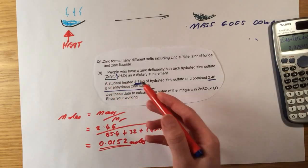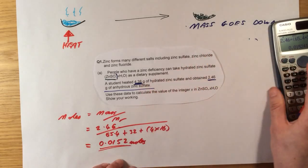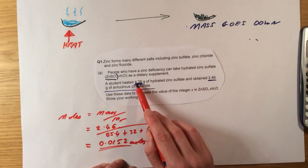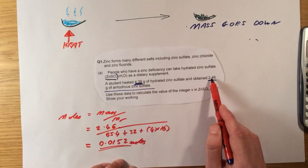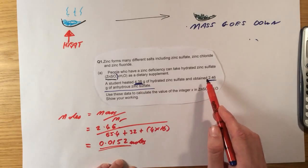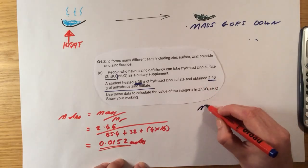I get an answer of 0.0152 moles of ZnSO4 left. And it looks like I'm a bit stuck here but I'm actually not. Because as I said up here, the difference in mass between the hydrate salt you start with and the anhydrous salt you have at the end must be the mass of water.